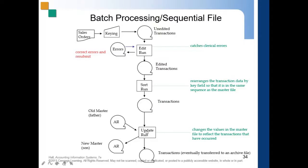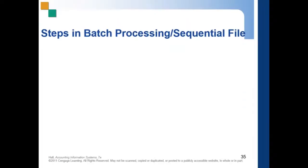After sorting, you get a list of transactions, then you run the update. The update changes the old AR to a new AR — the update run changes the values in the master file to reflect the transactions that have occurred.